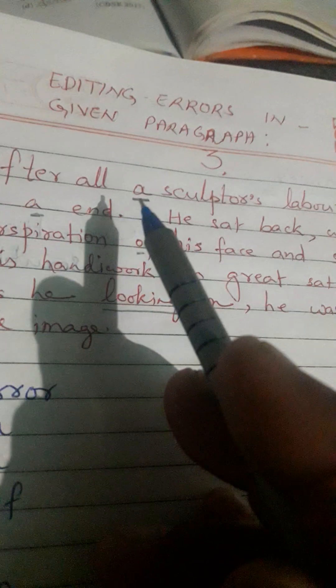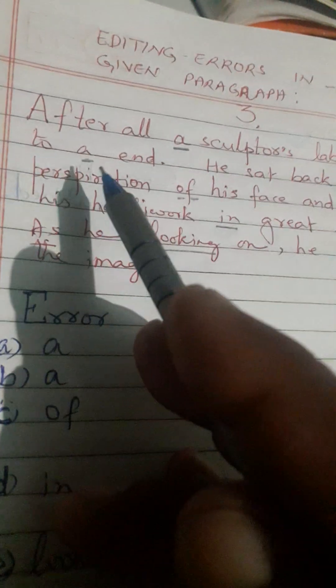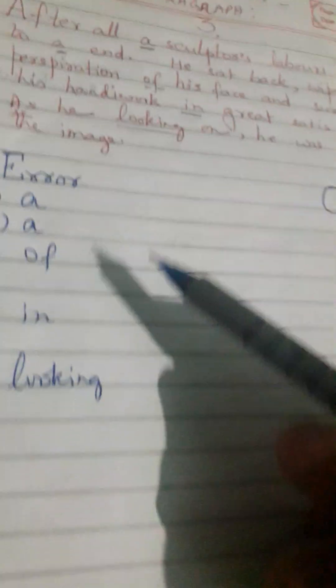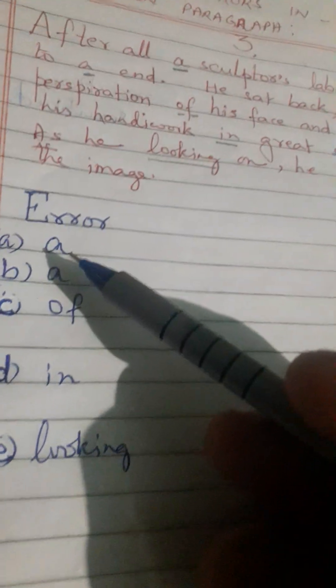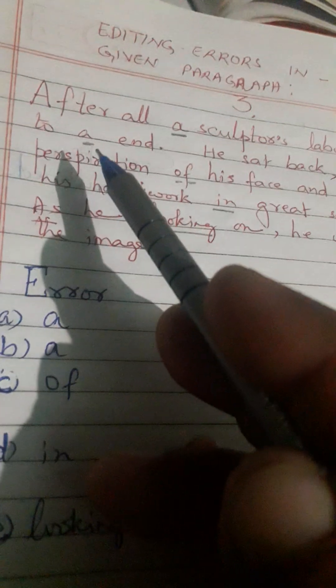In the line 'After all, a sculptor's labors had come to an end,' there are two errors. 'A' before 'sculptor's' is incorrect — it should be 'the.' And 'a' before 'end' should be replaced by 'an.' So you need to write both errors: 'a' replaced by 'the,' and 'a' replaced by 'an.'